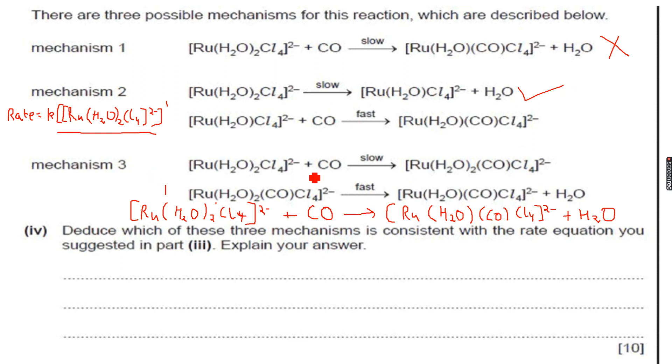Mechanism 3, the slowest step again contains both carbon monoxide and the complex ion, which is not possible, because there is no carbon monoxide in the rate equation. So this is also wrong. The answer is mechanism 2.